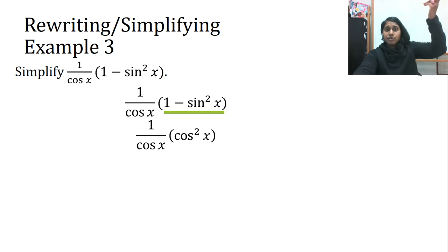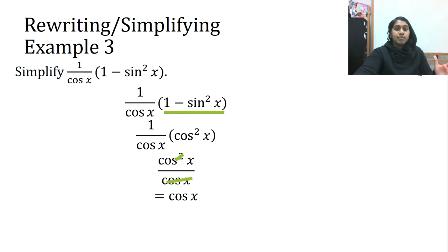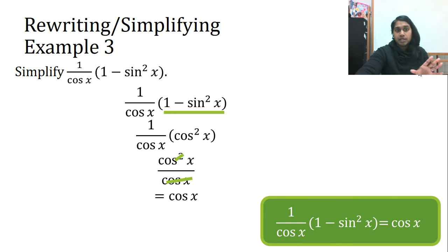Now I have two cosines up top and one cosine down bottom. I can get rid of one. And now I'm left with simply cos x. And guess what? That is my end answer. If I tell you to simplify and this is what you got to do, then your end answer is more than likely a single trigonometric value. You're going to end up with a single trigonometric value when you are rewriting.